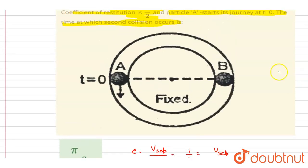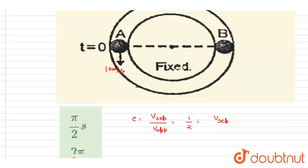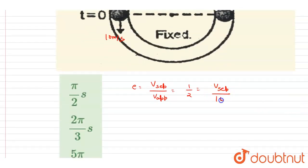So put the value here. From here you will get the separation velocity is 5 meters per second.